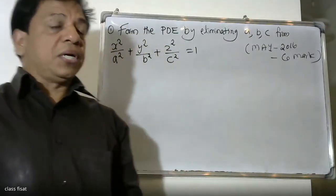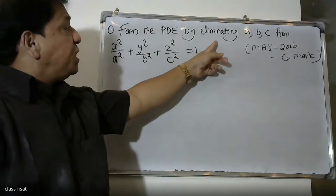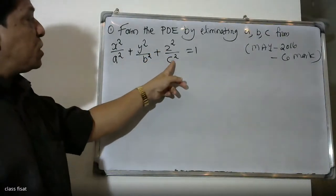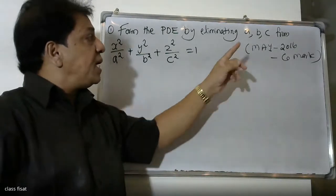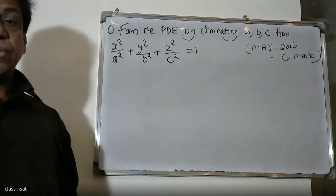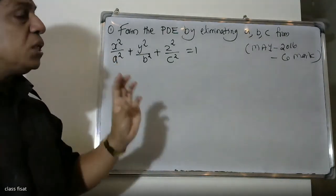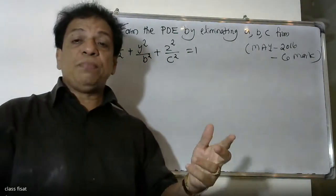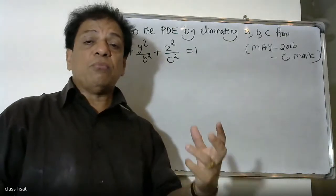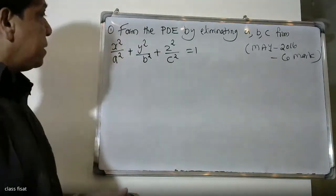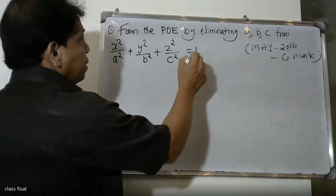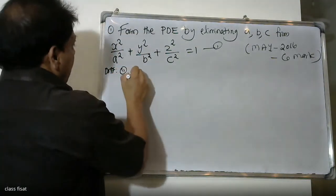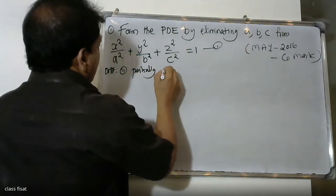Good morning students. Today we form the partial differential equation by eliminating a, b, c from x squared by a squared plus y squared by b squared plus z squared by c squared equals 1. Differentiating equation 1 partially with respect to x.